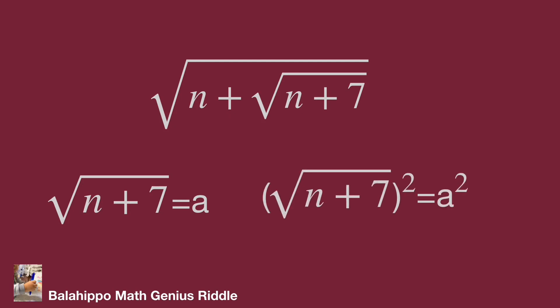Square both sides of this equation. We get n plus 7 equals a squared. So n equals a squared minus 7. Good, we get new information.